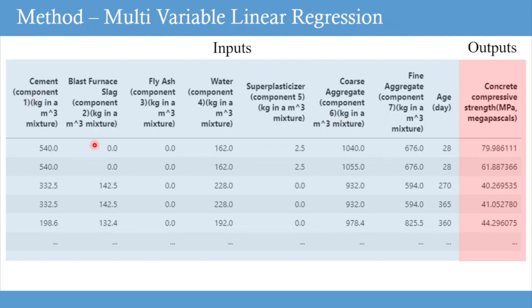These ingredients include cement quantity, blast furnace slag, fly ash, water, superplasticizer, coarse aggregate, fine aggregate, and age. All of these quantities are given in kilograms per meter cube, and the age is given in number of days.